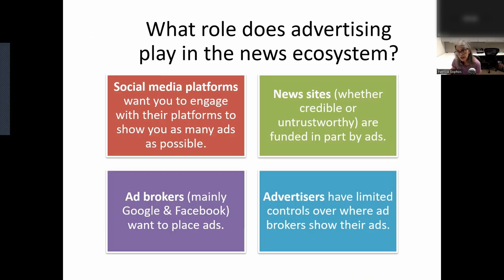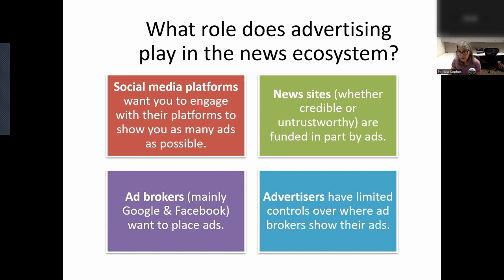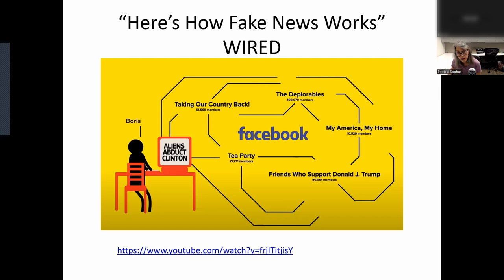We've touched on social media and news organizations and their role in distributing news. Now let's consider what role advertising plays in the news ecosystem. Social media platforms want you to engage with their platforms to show you as many ads as possible. News sites, whether credible or untrustworthy, are funded in part by ads. Ad brokers — mainly Google and Facebook — want to place ads. Advertisers have limited controls over where ad brokers show their ads. I want to show a brief video from Wired Magazine on how fake news works, really talking about the advertising and monetary aspect of this activity.